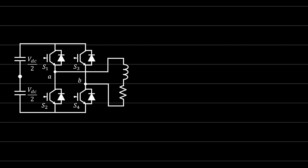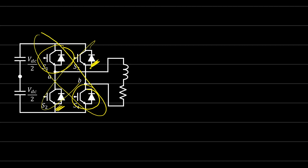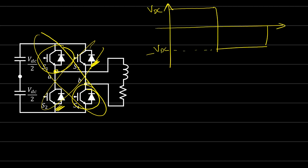Rule number two: switch one and four must work together at the same time. When switch one is conducting, switch four must also be conducting. When switch three is conducting, switch two must be conducting. So switches one and four work together, and switches three and two work together.